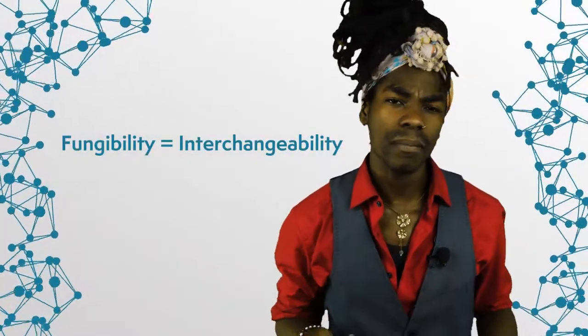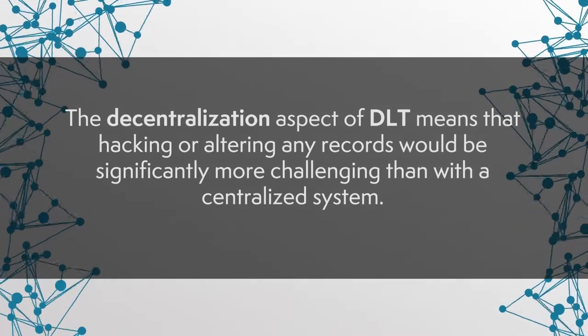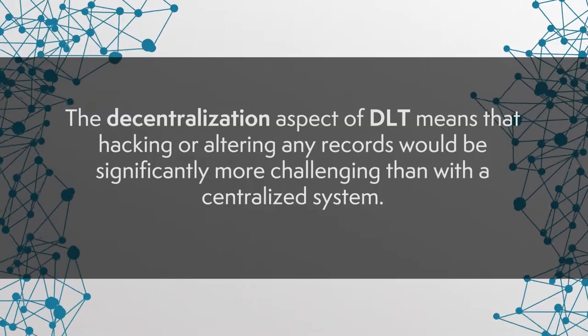Because of the sequential cryptographic hashing of each block, it is computationally infeasible to rewrite block history. And if you need a refresher on fungibility — the word means interchangeability. Fungible items are, for example, traditional currencies, because you can always exchange any given 1 euro coin for any other 1 euro coin. Non-fungible items cannot be exchanged for one another — they can be considered unique. The decentralization aspect of DLT means that hacking or altering any records would be significantly more challenging than with a centralized system. Due to a blockchain's node design, with each node being hosted by different parties, disrupting the system by getting authentication data of a single party is particularly impossible. Even if the security of one network participant is compromised, the integrity of the rest of the system should remain intact. This mitigates the single point of failure concern that many people express regarding centralized IoT devices and systems.